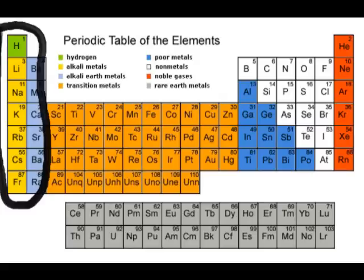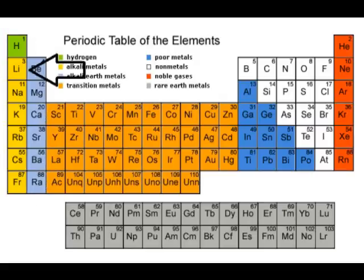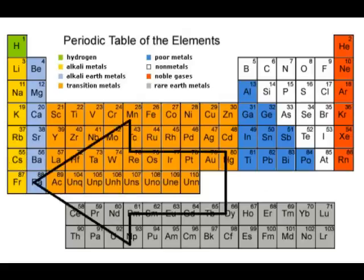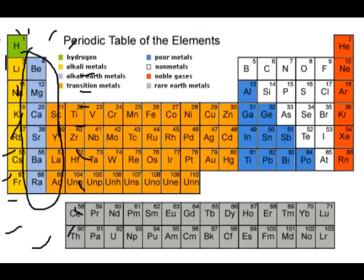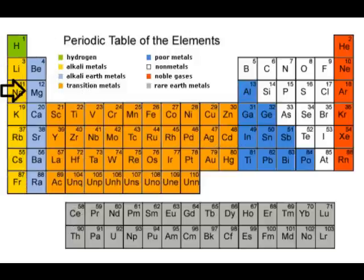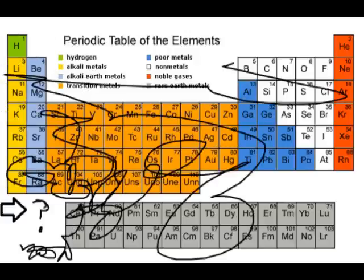We'll go over the table from left to right, starting with the alkali metals, I hope it's alright. Lithium, sodium, potassium too. Rubidium, cesium, and francium. Next are the alkaline earth metals, right of the previous metals: beryllium, magnesium, calcium, strontium, barium, radium.